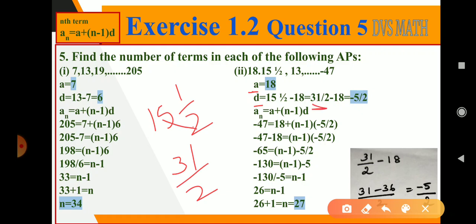If you take LCM, observe 31 by 2 minus 18. 2 into 18 is 36. So 31 minus 36 by 2, here we get minus 5 by 2. So here what is the d value minus 5 by 2.